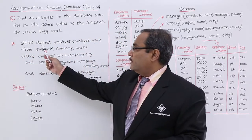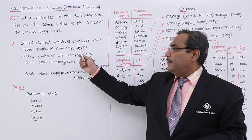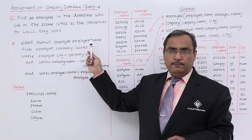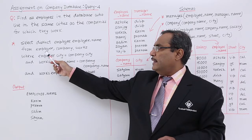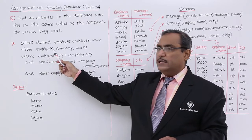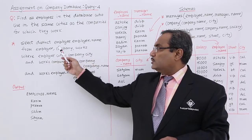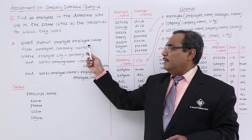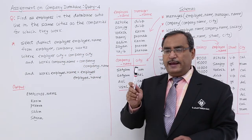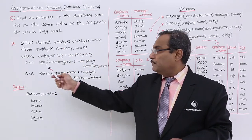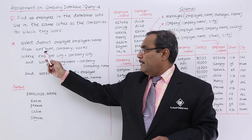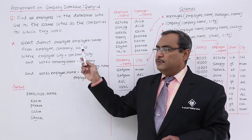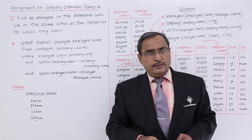Here is the query: SELECT DISTINCT employee.employee_name. I have written employee.employee_name because employee_name is common in both the employee table and the works table. So SELECT DISTINCT employee.employee_name means each employee name will appear once in the output. The FROM clause includes three tables: company, works.